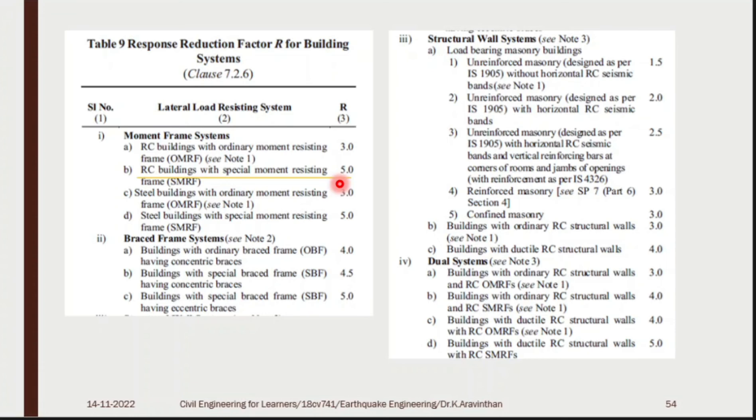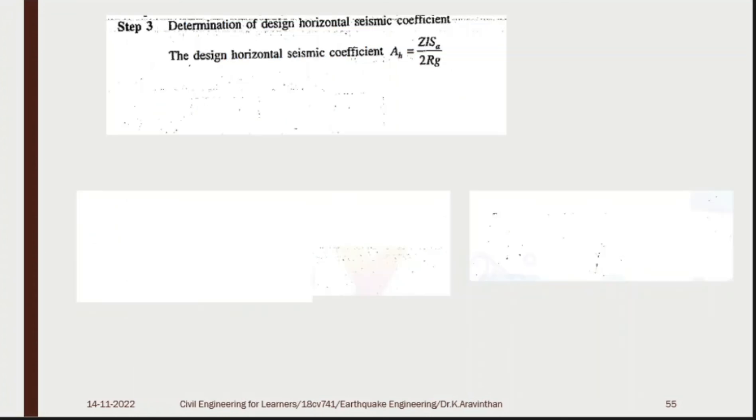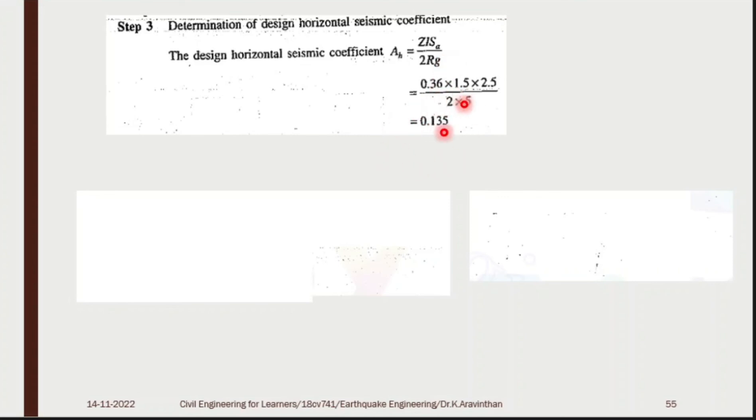Step 3 — Determination of horizontal seismic coefficient: AH = (Z/2) × (SA/G) × (I/R). Substituting all values, AH = 0.135. Next, find VB = AH × W, where AH = 0.135 is now known. The next step is to find W, the seismic weight of the building.